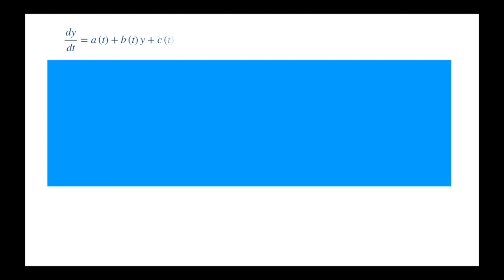Let's see the famous Riccati equation. You can see it's a very simple nonlinear extension of the first order equation. It's first order because we only have the first derivative, and the equation is nonlinear because we have y squared. By the way, y is a function of t as well, but we suppress the dependence on t to avoid clutter. Essentially, y is a function whose derivative is equal to a quadratic function of y, with coefficients that depend on another variable, say time.